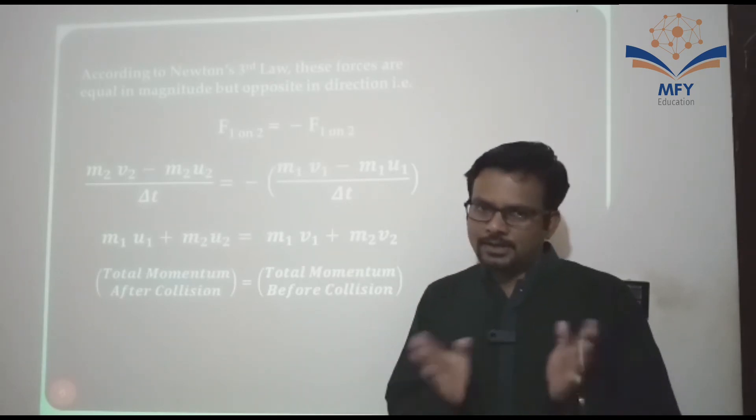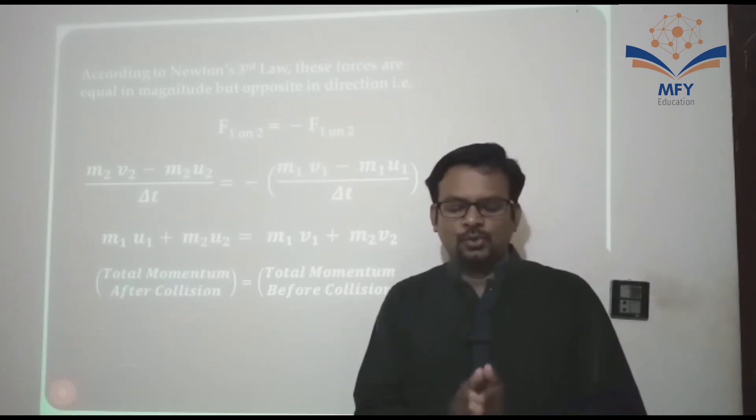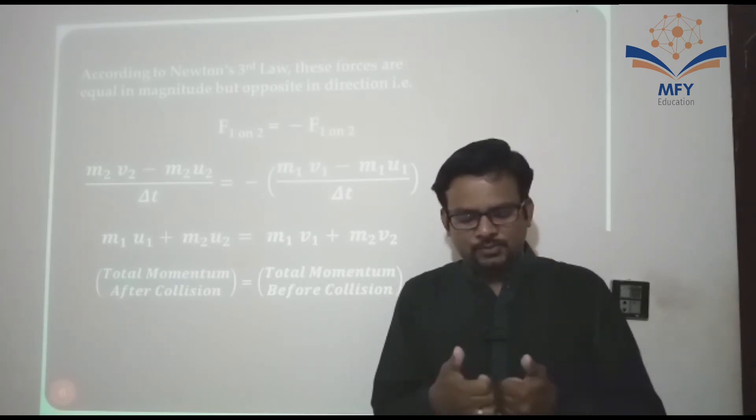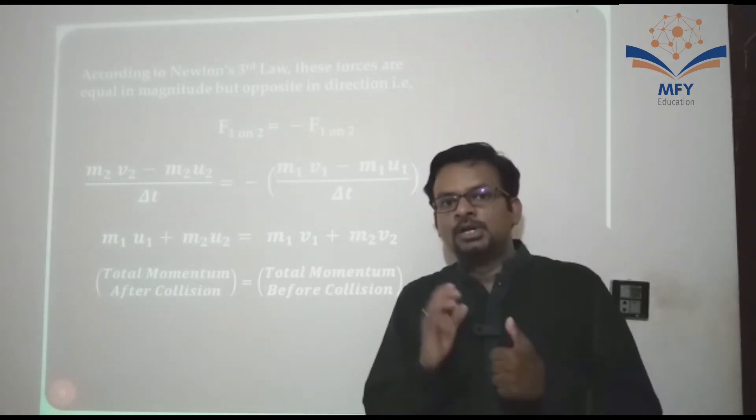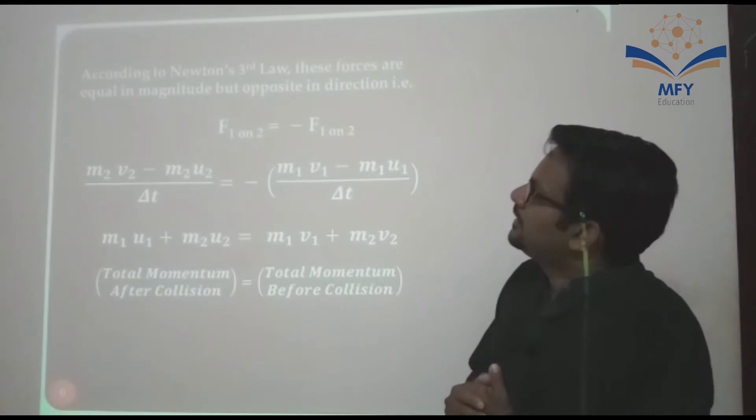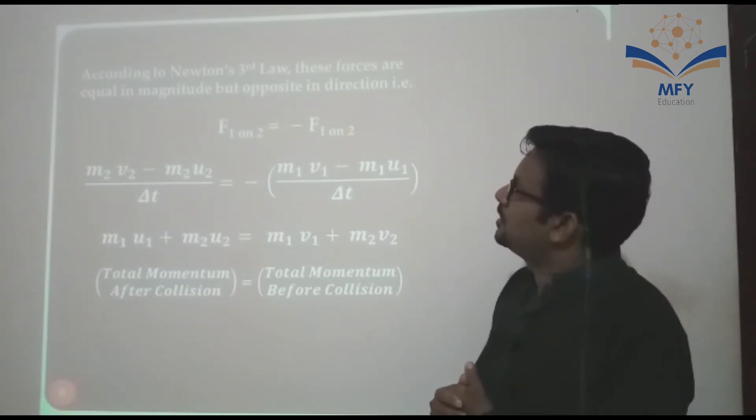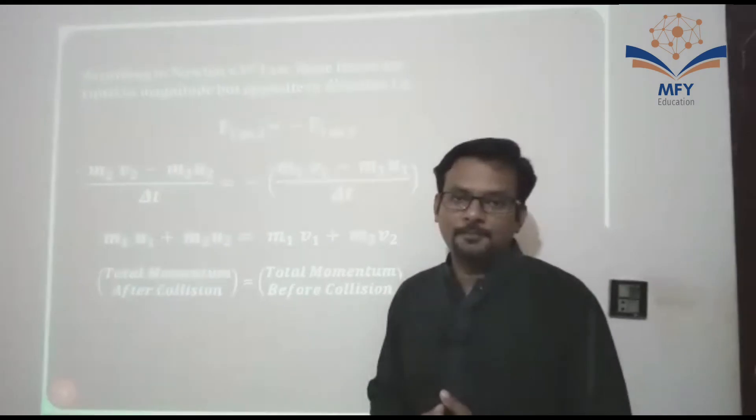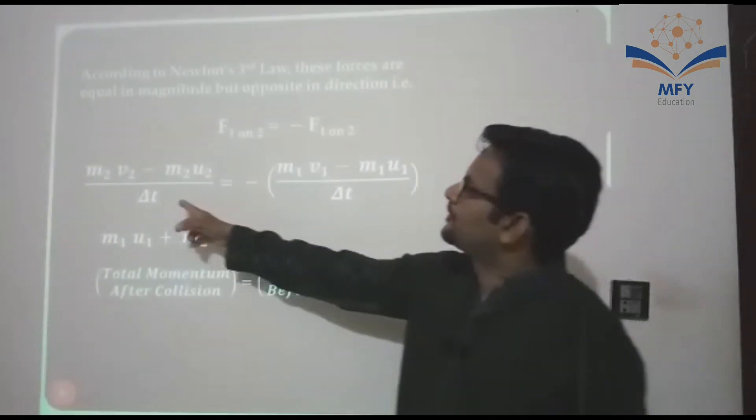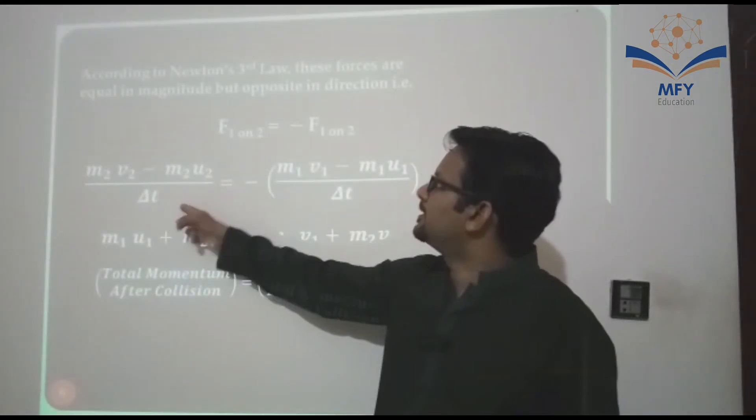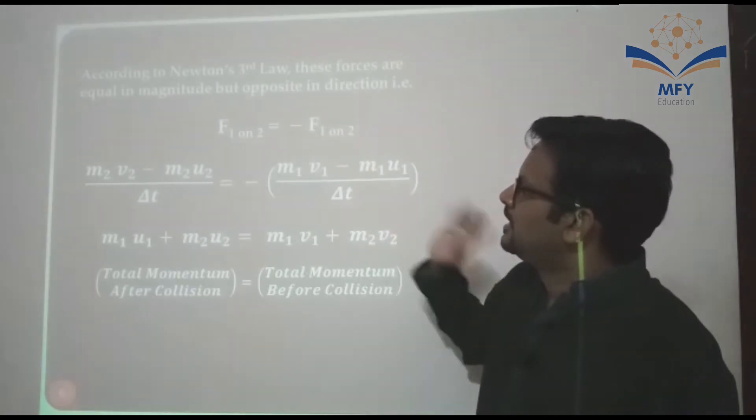The force of action and reaction are equal but opposite in direction. So we can write F1 equal to minus F2. F1 is M1V1 minus M1U1 upon delta T equal to minus F2, which is M2V2 minus M2U2 upon delta T.